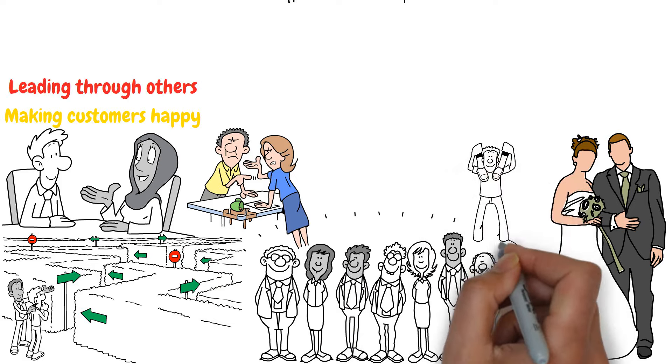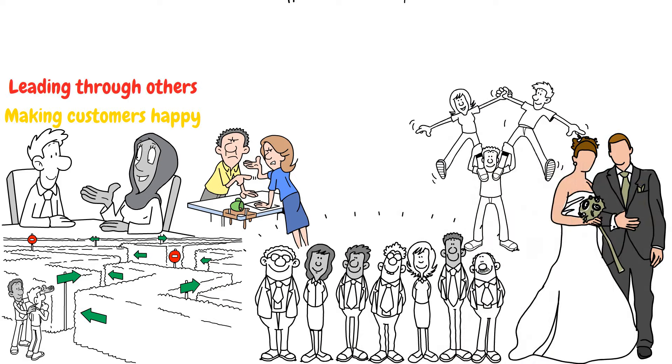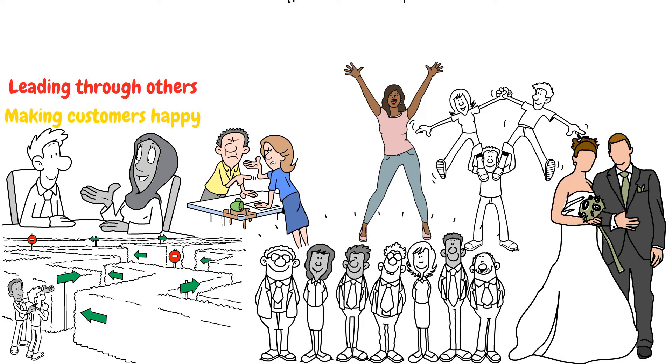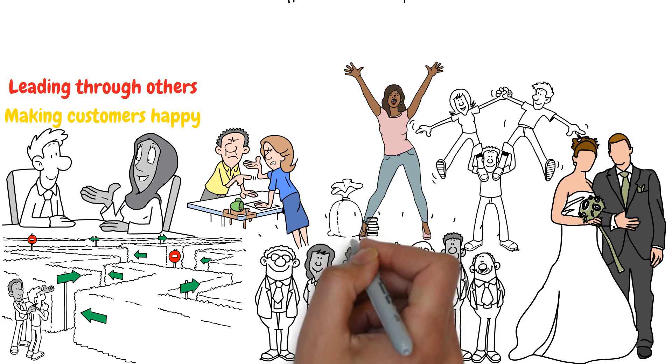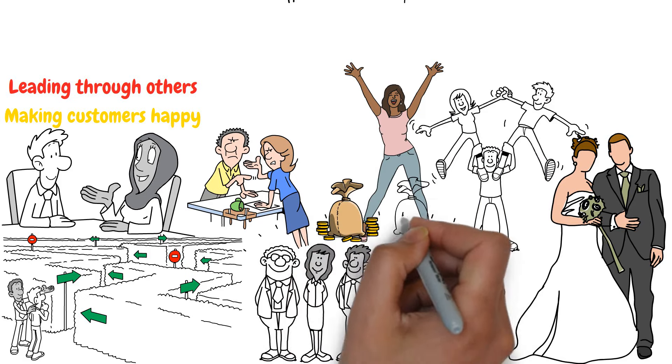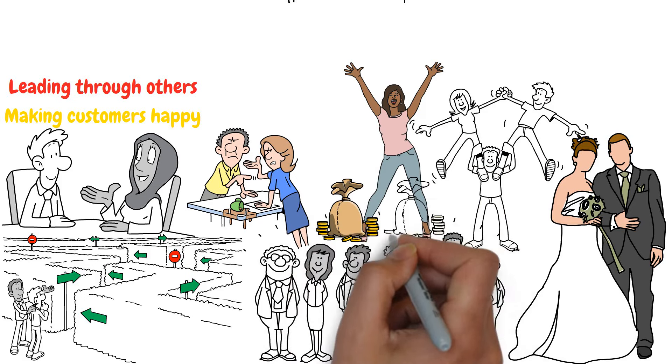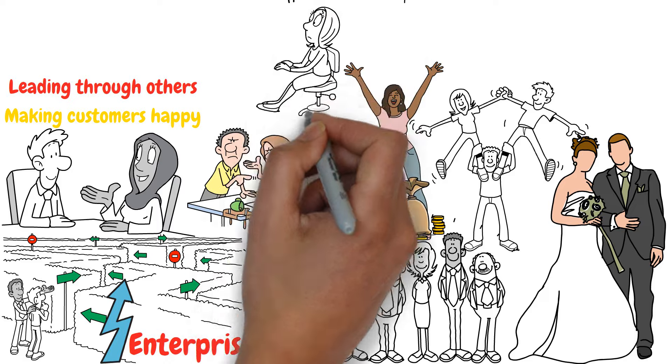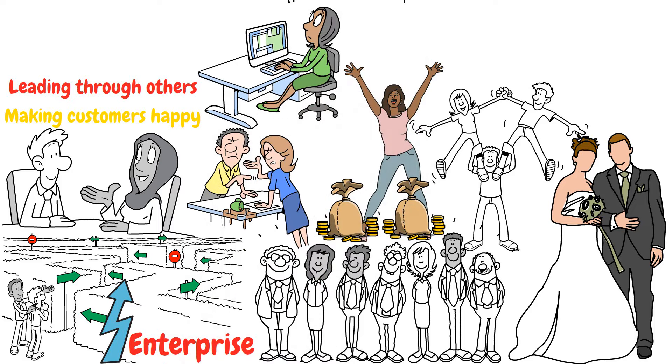These simple principles—making customers happy, leading through others, surrounding yourself with inspiring people—will take you far. Look at Rose Blumkin. She started with nothing, couldn't speak English, couldn't read or write, yet she built a business worth $1.5 billion from just $2,500. And consider Enterprise. I believe they also grew with minimal extra investment, building their business from the ground up.